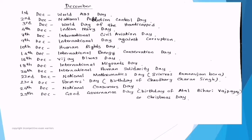December important dates: 1st December — World AIDS Day. AIDS stands for Acquired Immunodeficiency Syndrome (share the full form of HIV in the comments). 2nd December — National Pollution Control Day (Central Pollution Control Board headquartered in New Delhi). 3rd December — World Day of the Differently Abled. 4th December — Indian Navy Day. 7th December — International Civil Aviation Day (share the current civil aviation minister in the comments). 9th December — International Day Against Corruption. 10th December — Human Rights Day.